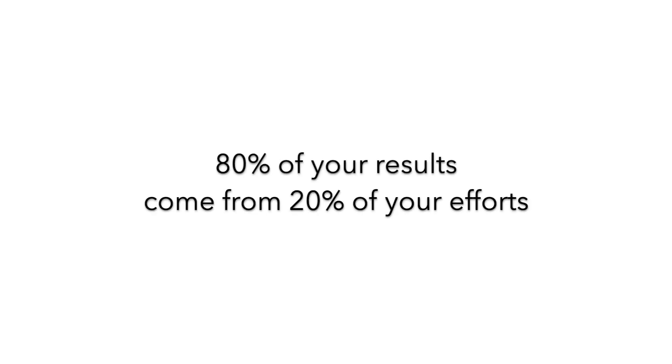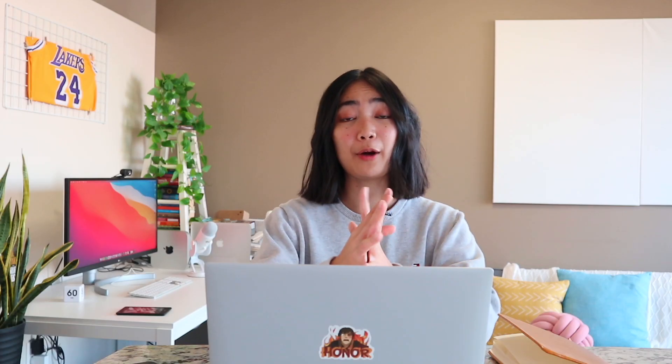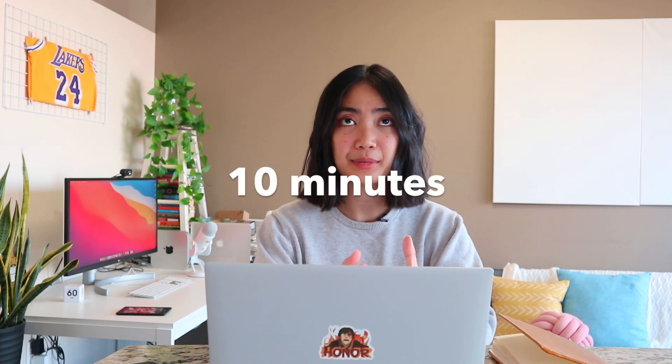I have a math economics degree, so feel free to take my advice with a grain of salt in taking history notes. But if I was still in university, I would apply the 80-20 rule, which basically means 80% of your results come from 20% of your effort. So I would ask myself: if I only had 10 minutes to study this 40-page chapter, what is the best use of my time?